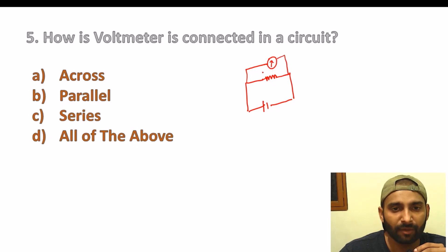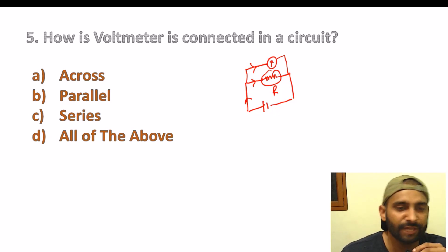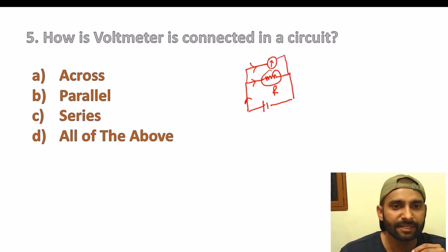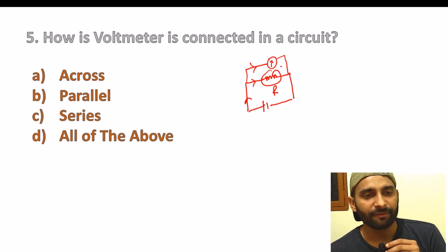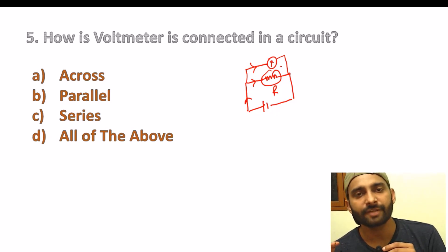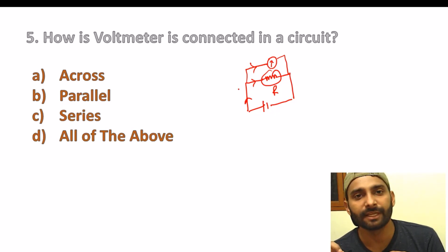Because this is where voltage is measured — it tells us the voltage across that resistance R. Students, resistance can be any appliance you use at home — a fridge, an AC — all of these act as resistance. So if you want to find the voltage of your fridge, you connect the voltmeter in parallel with it, and that gives you the voltage.